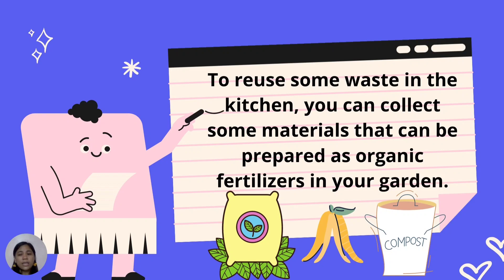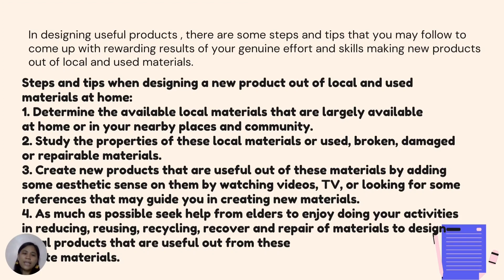To reuse some waste from the kitchen, you can collect materials that can be prepared as organic fertilizer in your garden. This is called composting. Composting is one way to reuse organic material that may otherwise end up in a landfill. In the next lessons, you will be doing activities that will help you design useful products from local materials found at home. In designing useful products, here are some steps and tips to follow to come up with rewarding results from your genuine effort and skills in making new products out of local used materials.